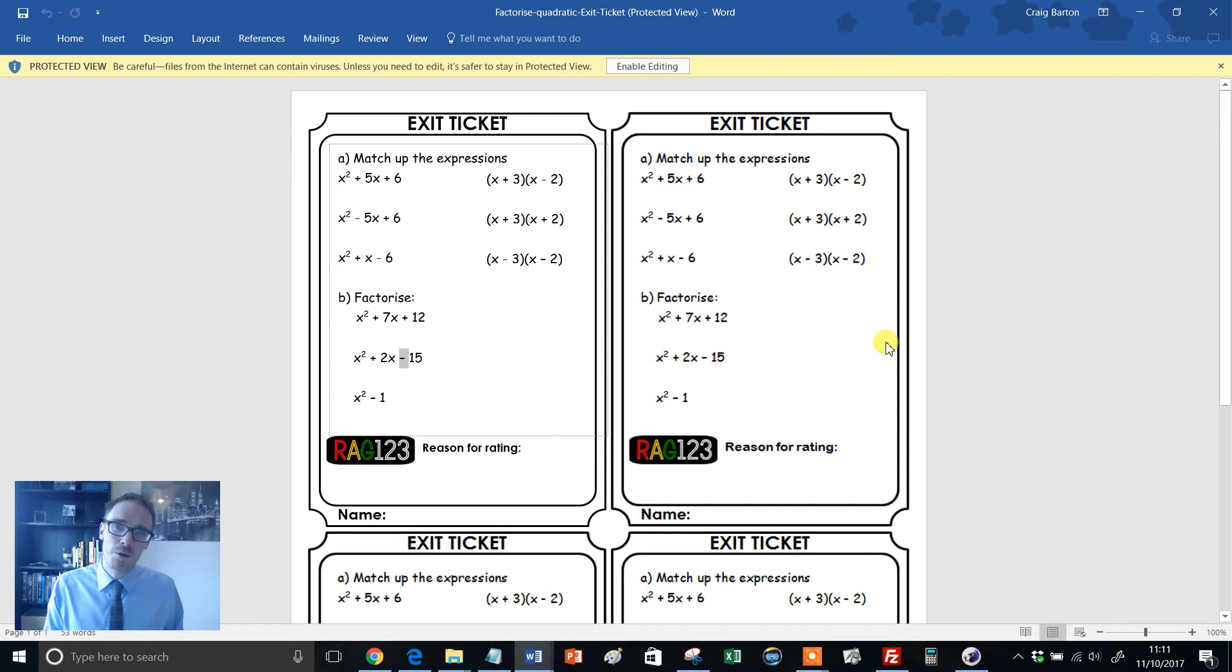But how do we get around the other problem? How do we get around this fact that we can't infer long-term learning just from short-term performance? Well, what about this for an idea - the concept of a delayed exit ticket? Just bear with me here. Imagine I've taught factorising quadratic equations, and then I'm about to move on to angle facts or histograms. What about instead of giving this exit ticket out at the end of the lesson on factorising quadratics, instead I give this out at the end of the lesson on angle facts or histograms.